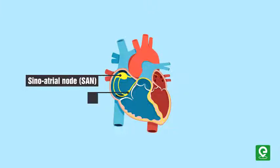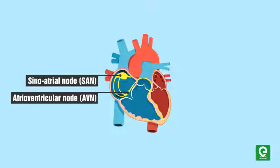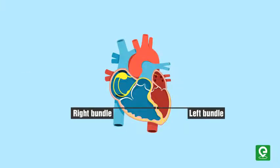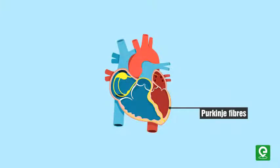Another mass of nodal tissue is present in the lower left corner of the right atrium, close to the atrioventricular septum, called the atrioventricular node or AVN. A bundle of nodal fibers, the atrioventricular bundle, continues from the AVN, passes through the atrioventricular septa to emerge on top of the interventricular septum, and immediately divides into right and left bundles. These branches give rise to minute fibers throughout the ventricular musculature called Purkinje fibers. These fibers, along with the right and left bundles, are known as the bundle of His.